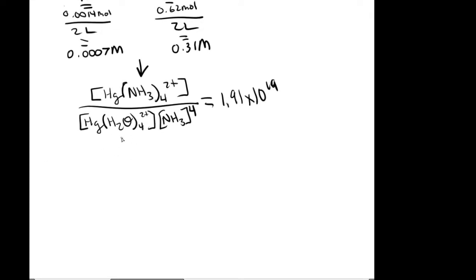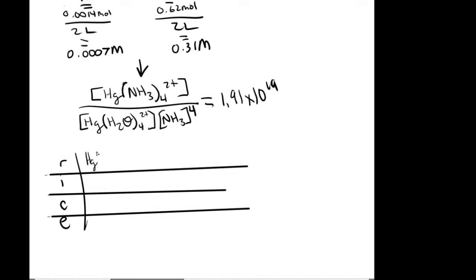So I'm going to go to a rice table. Make a rice table with Hg(H₂O)₄²⁺. And then this is NH₃. I usually put a superscript up here just so I don't forget to write it in the chart itself.